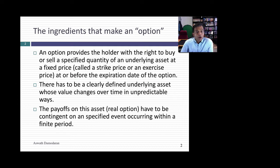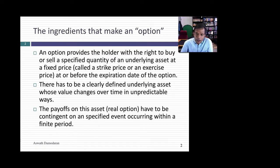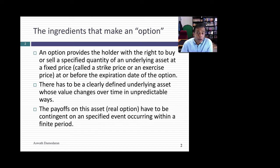An option provides its holder with the right to buy or sell a specified asset — called an underlying asset — at a fixed price, any time before the expiration of the option. There is an underlying asset; without it an option cannot live. The price is fixed upfront; that price is called the strike price. It's a right, not an obligation, and the best way to see how options work is with what's called a payoff diagram.